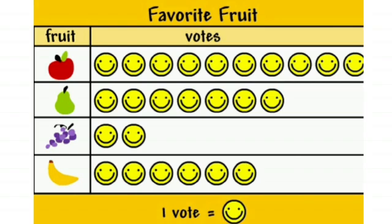So this is how data is represented in different forms — that is tallies, bar graphs, and pictographs. This is the way to handle data and represent it graphically with the help of pictures, tally marks, or bar graphs. I hope you all have enjoyed today's session.